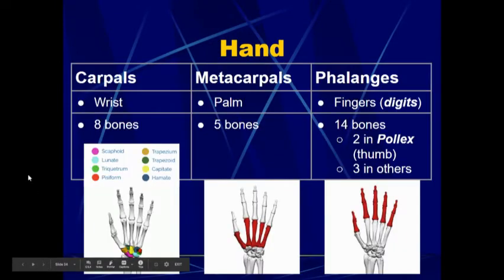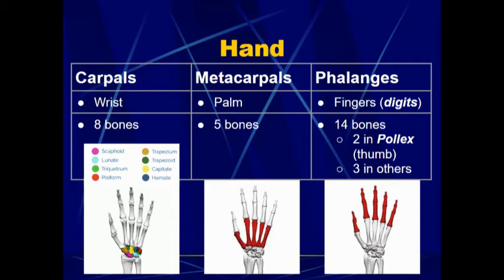The hand has three major divisions of bones. We have the carpals, or wrist bones — there are eight different wrist bones, considered short bones that allow movement by sliding or gliding over each other. You do not need to know the eight individual names, but you should know there are eight carpals. The metacarpals form the palm and there are five. Then for phalanges, there are 14 phalange bones forming our fingers or digits — three phalanges in all fingers except the pollux or thumb, which only has two.